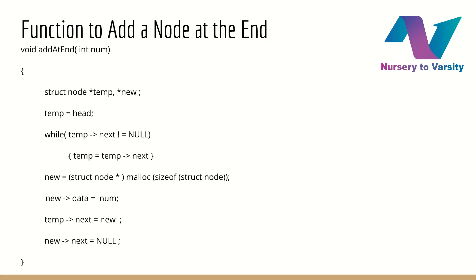While, temp arrow next not equal to null, this while loop is used to go till the end, to insert a new node. And in brackets, temp arrow next not equal to null means, keep on incrementing till temp arrow next not becomes null. And in this while loop, temp equal to temp arrow next means, we are moving forward one by one to the next node.